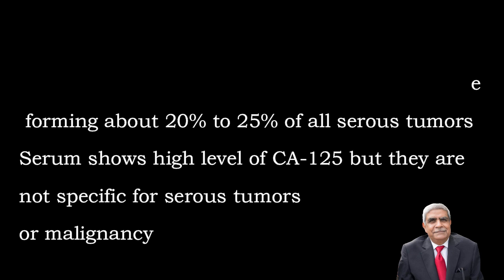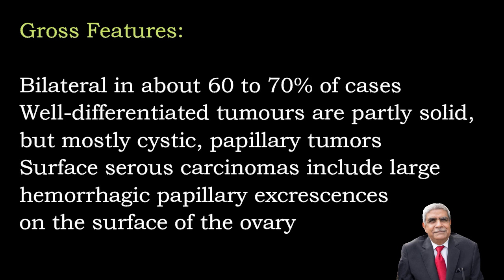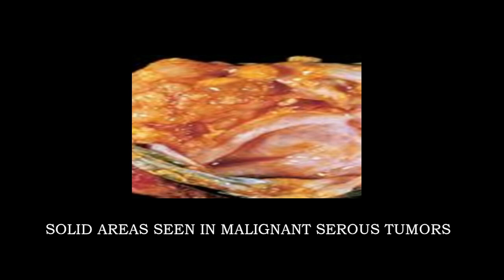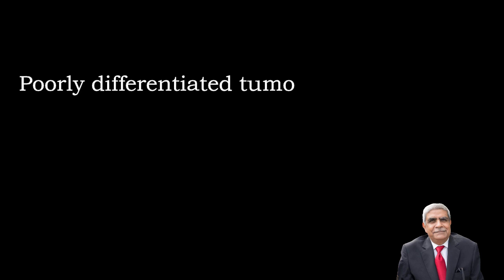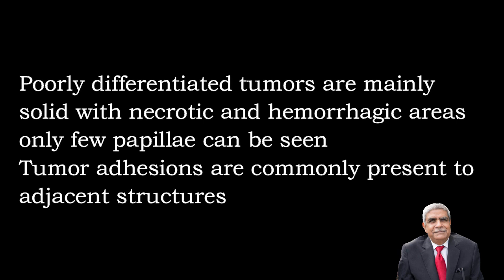Malignant serous tumors are bilateral in about 70 percent of cases. Well-differentiated forms are partly solid but mostly cystic and papillary; when cystic they are called serous cyst adenocarcinoma, and when papillary structures are present they are called papillary serous cyst adenocarcinoma. Surface serous carcinomas include large hemorrhagic papillary excrescences on the surface of the ovary. Poorly differentiated tumors show solid areas with hemorrhage, necrosis, and few recognizable papillary structures. Tumor adhesions to adjacent structures are common.